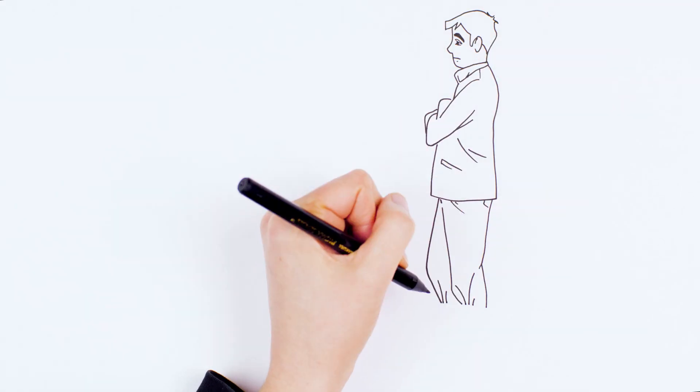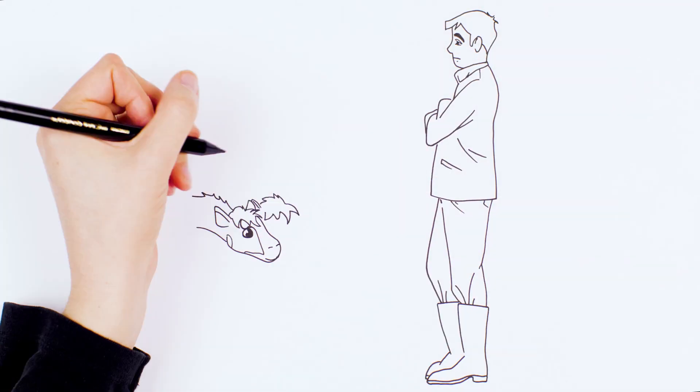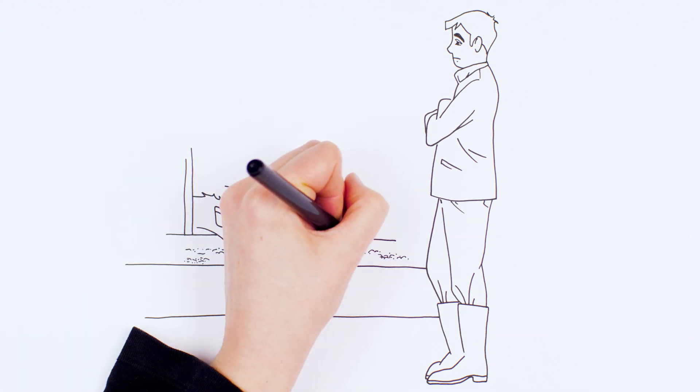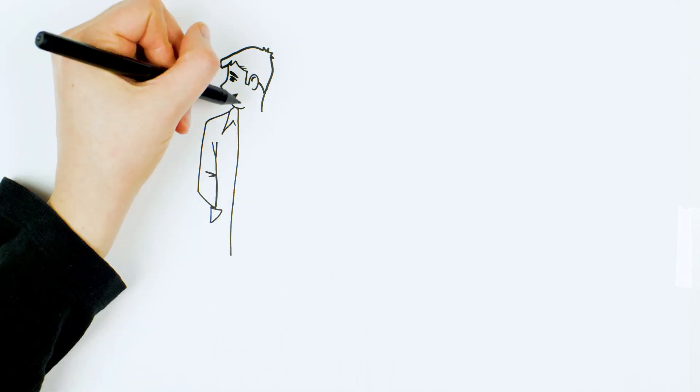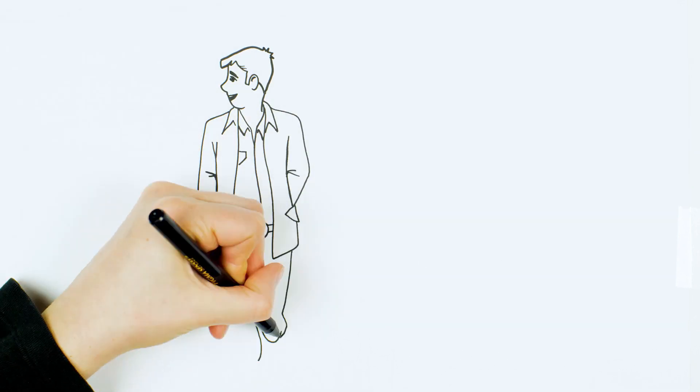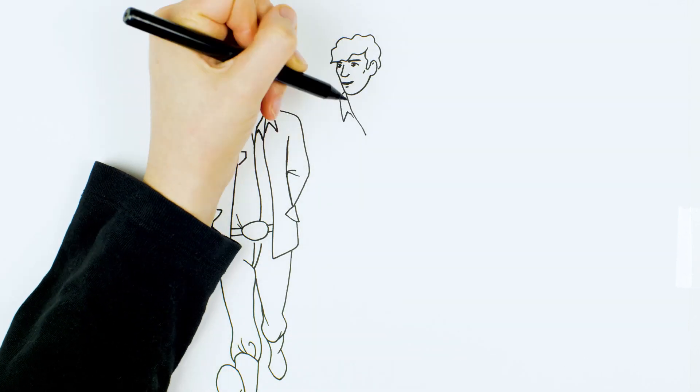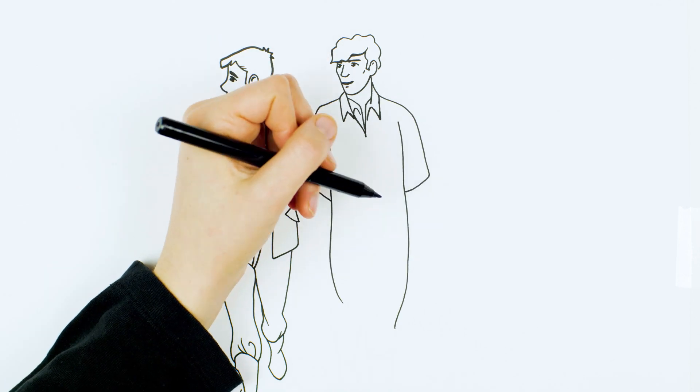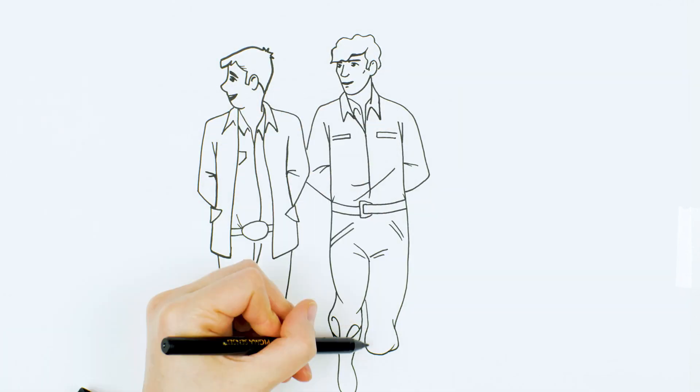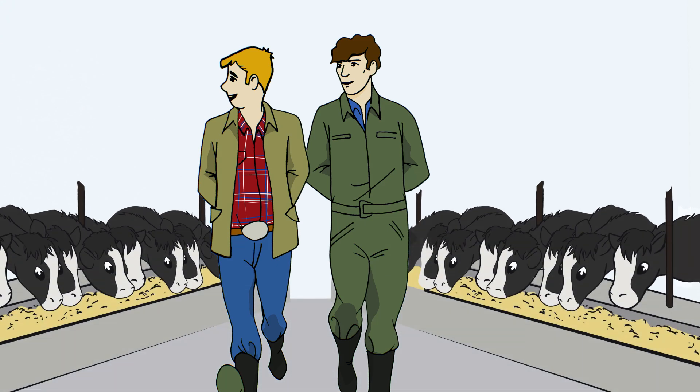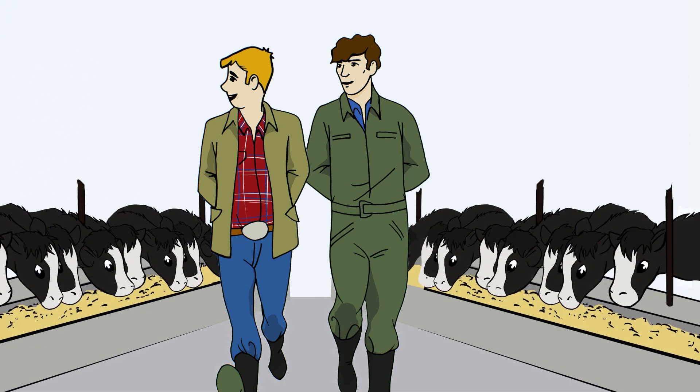For example, Albert, one of my veal clients, was finding that many of his calves were developing pneumonia and he was using a lot of antimicrobials. After walking through the calf barn, I suggested changing the ventilation system and stocking density to improve air quality and prevent disease. Over my next few visits, we found that changes greatly improved the air quality of the calf barn and he was treating far fewer pneumonia cases.